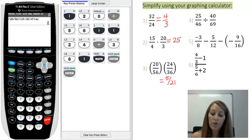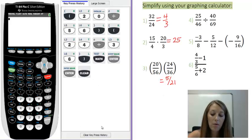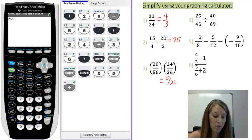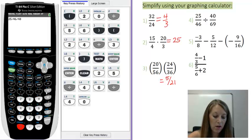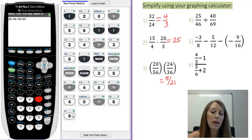Now, in example four, I have 25 over 46 divided by 40 over 69. But look at what happens if I type it in just like I see it. 25 over 46 divided by 40 over 69. If you type it in like this, your calculator will actually give you an incorrect answer.